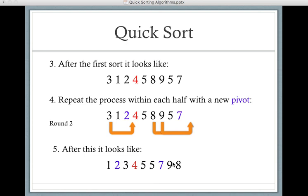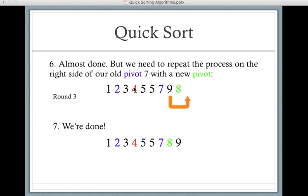So we don't need anything on the left side of our original pivot. We don't need anything on the left side of our second pivot, but we do need a new pivot here. So we're going to choose 8, and 9 is greater than 8, so it gets moved over to the right. And so using just 3 rounds of sorting, we have put these in numerical order.